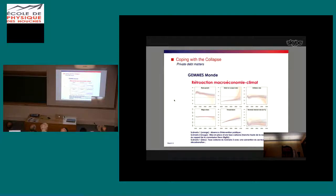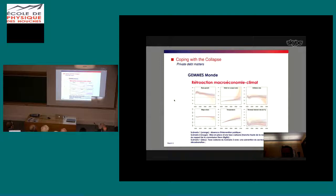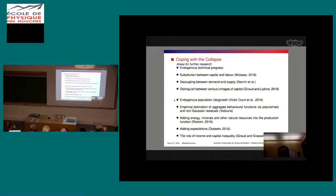Different shapes of carbon taxes were considered, used for the Stern-Stiglitz Commission report published in May 2017 in Berlin, of which I was a member. The main conclusion is that with a sharp enough carbon tax, it is possible to avoid collapse and remain close to 2.5 to 3 degrees at end of century. We also ran stochastic versions of the model, placing probability distributions on uncertain variables such as climate sensitivity — known to range from 1.5 to 6 with a median of 3.1 — using Monte Carlo simulations.